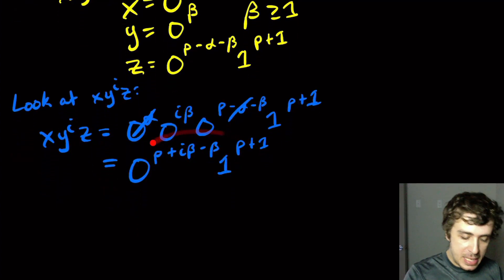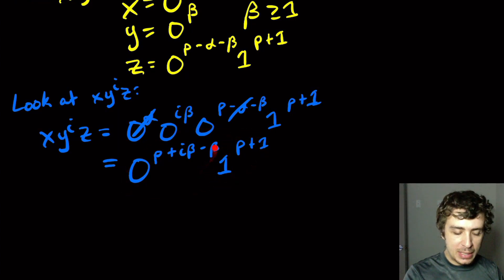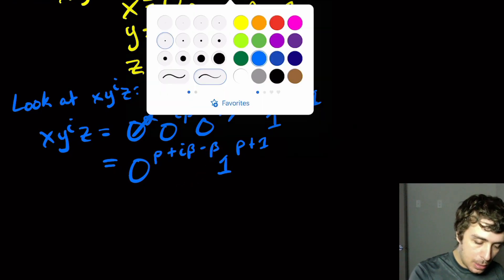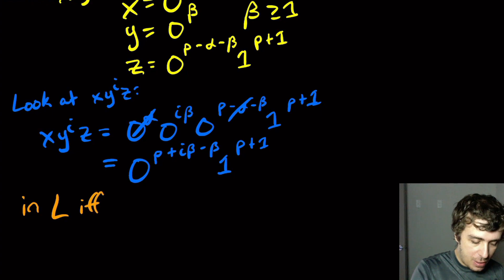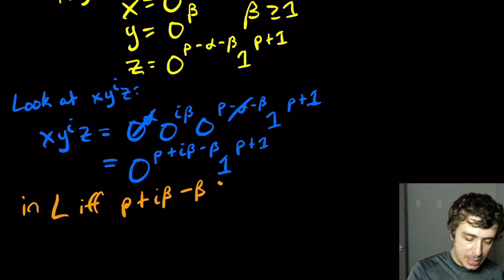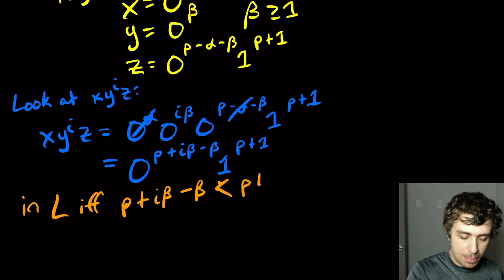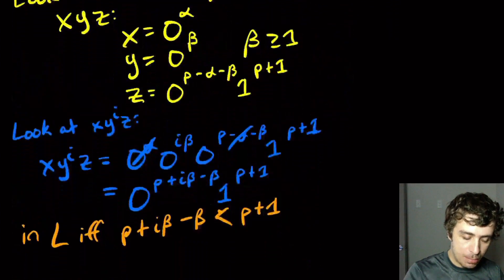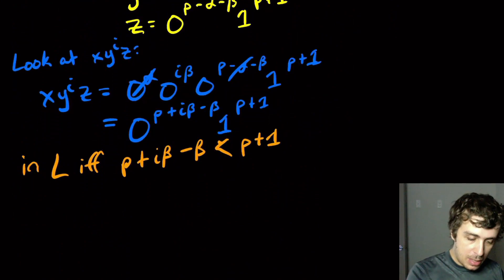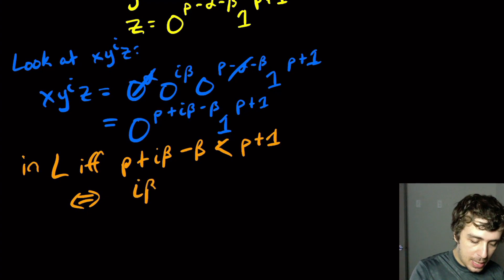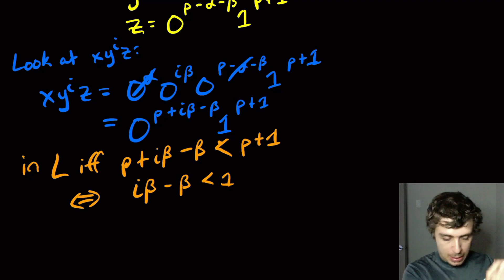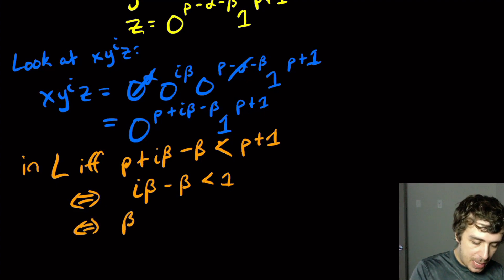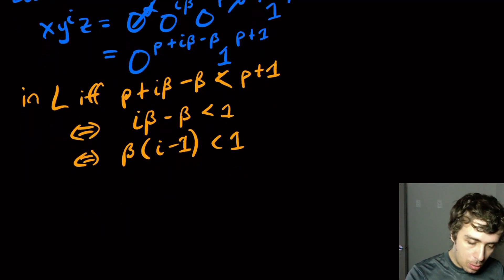And of course, this is only going to be in the language if the number of 1s is bigger than the number of 0s. So this is in that language L, if and only if P plus I beta minus beta, which is the number of 0s, is less than, strictly less than, P plus 1. And let's make sure that it's the 1s, not the 0s. Yep, more 1s than 0s. So this is true if and only if I beta minus beta is less than 1. So that means, so let's just factor beta out. So that's going to be beta times I minus 1 is less than 1.